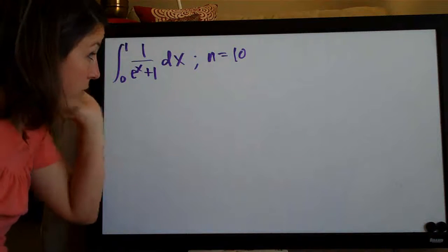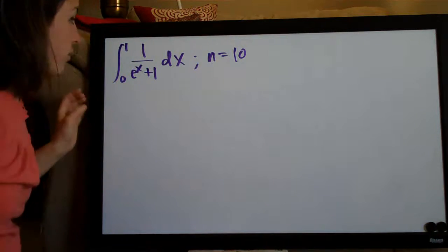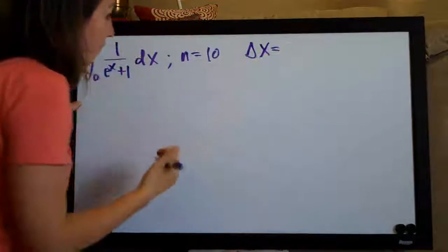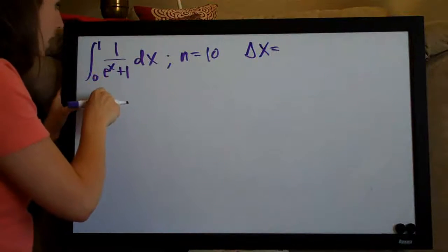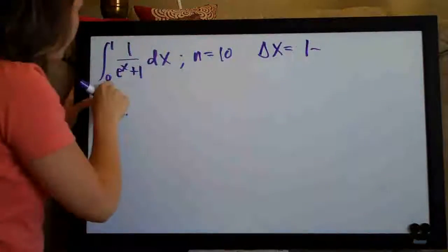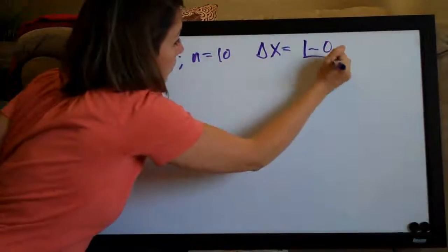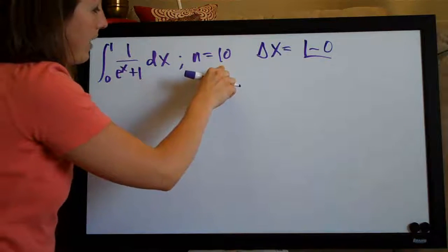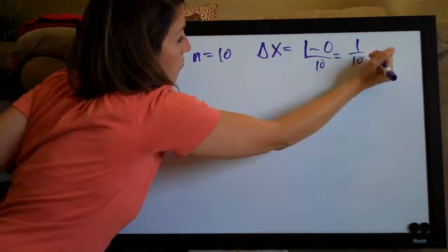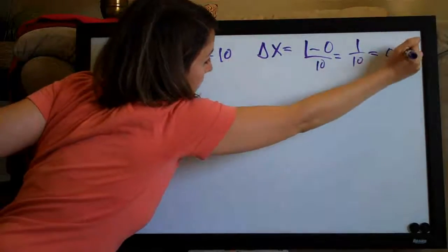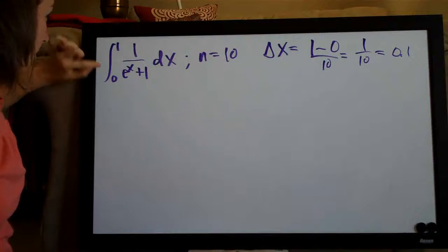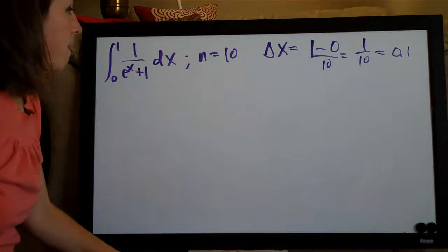The first thing that we need to do is find delta x which is really simple to do. The way that we find delta x is by subtracting the top number on the range, one, and we subtract the bottom number on the range, zero, and we divide by n. So we get one minus zero is one over ten which is the same thing as zero point one. So that's the first thing we do.